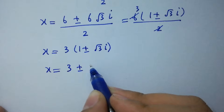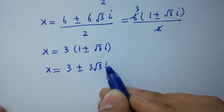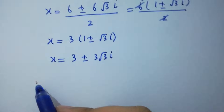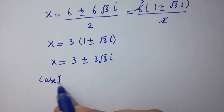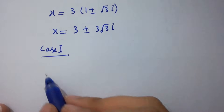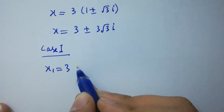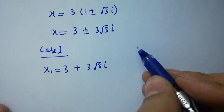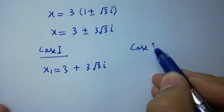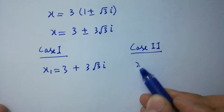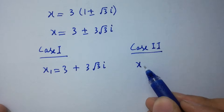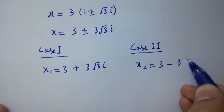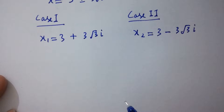Finally, x equals 3 plus or minus 3 square root of 3 i. So we have two cases: Case 1: x1 equals 3 plus 3 square root of 3 i, and Case 2: x2 equals 3 minus 3 square root of 3 i.